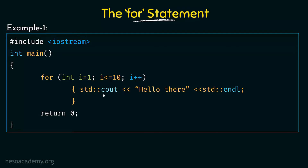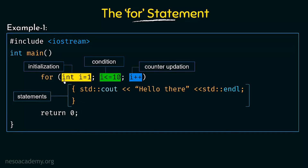The statement inside the for loop prints 'hello there' and then a new line. Outside the for loop we return 0. Remember the three important things: the initialization part, then the condition, and then the counter updation. These are the three things you have to write in order inside a for statement — initialization, the condition, and the counter updation — and then the statement inside the for loop.